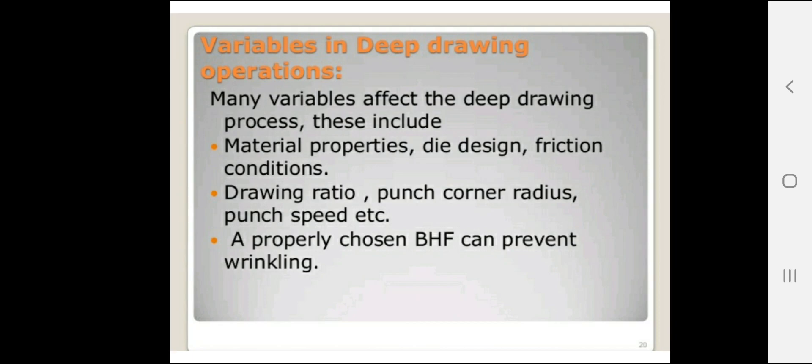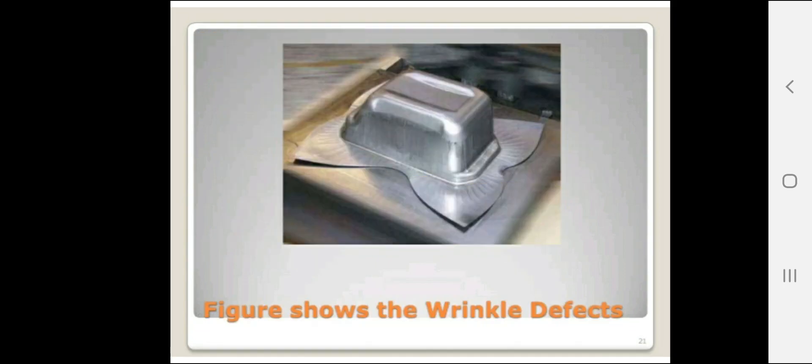Many variables affect the deep drawing process, including material properties, die design, friction conditions, drawing ratios, punch corner radius, punch speed, and blank holder force (BHF), which can prevent wrinkles. These are some remedies to consider for avoiding wrinkle defects, as shown in the figure illustrating the wrinkle defect.